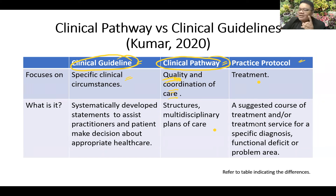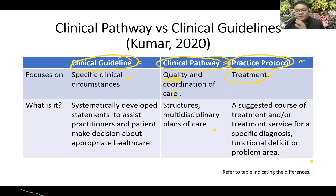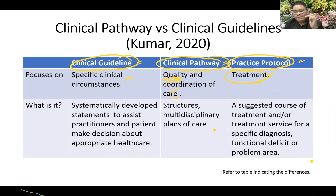Practice protocol usually refers to treatment. For example, a protocol for ovarian cancer would include a combination of drugs: first perform surgery, then perform chemotherapy, specifying how many times chemotherapy will be performed and which medications will be used. A protocol is the set of steps — the guide to managing a specific condition.